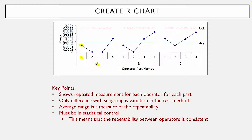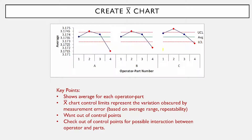The overall average is a measure of repeatability. The R chart has to be in statistical control, because that means the repeatability between the operators is consistent. This is a measure of that repeatability.